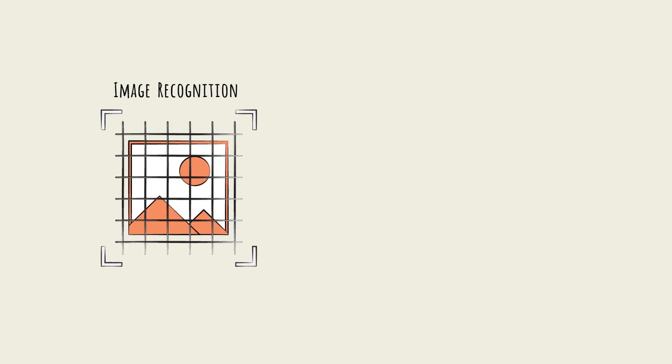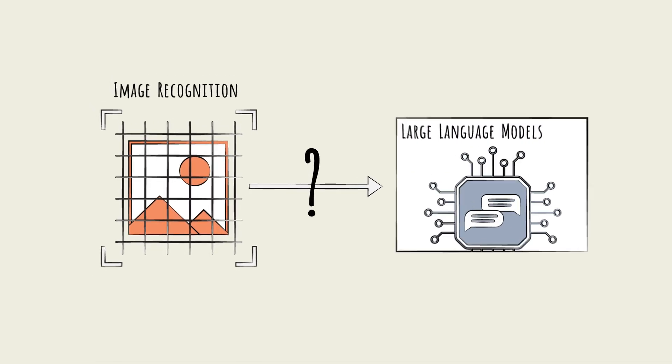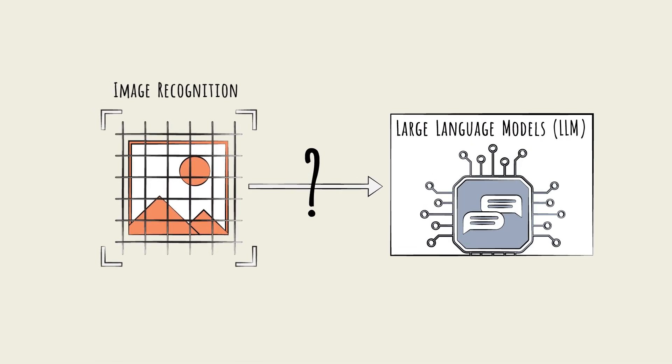So, how do we go from a basic image recognition model to a large language model, LLM, like the ones that power ChatGPT?